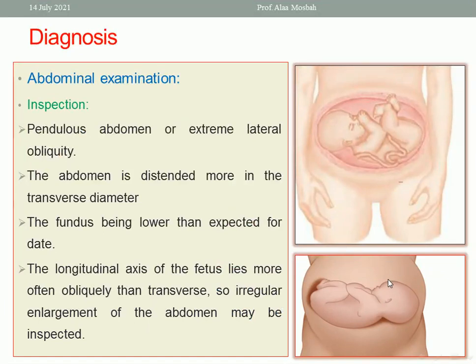By abdominal examination, the abdomen is pendulous, maybe due to multiparity, or shows extreme lateral obliquity. The abdomen is distended more in the transverse diameter because the baby lies transverse. The fundus is lower than expected for the gestational age. The longitudinal axis of the fetus lies more often oblique than transverse, which is why you may see irregular enlargement of the abdomen on inspection.